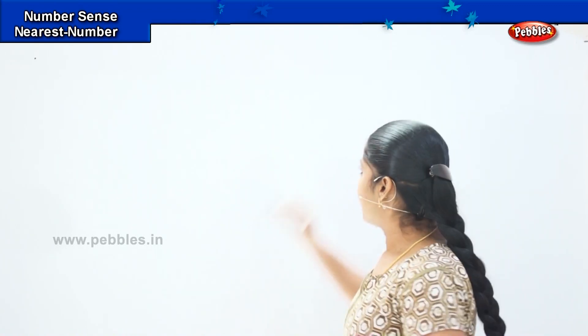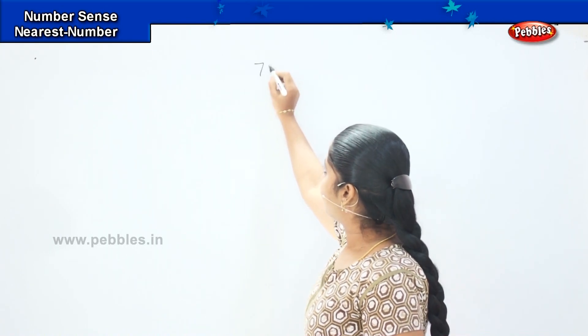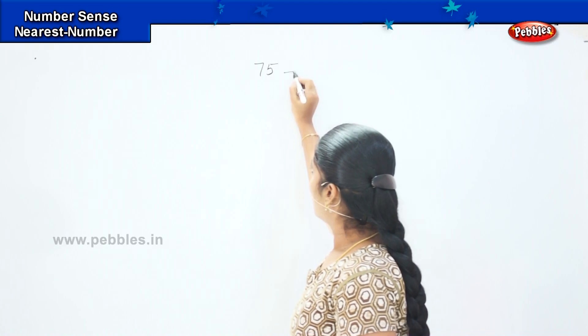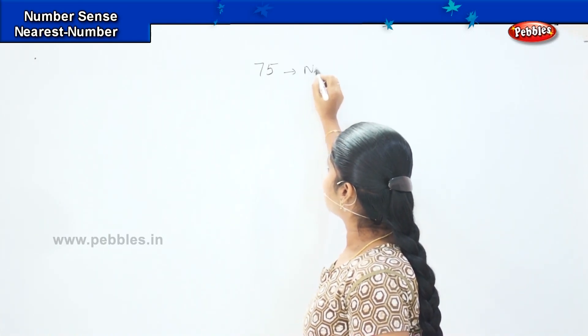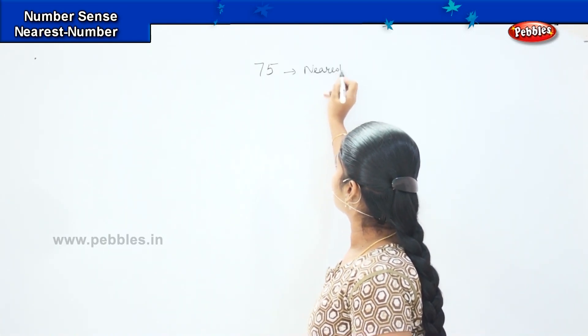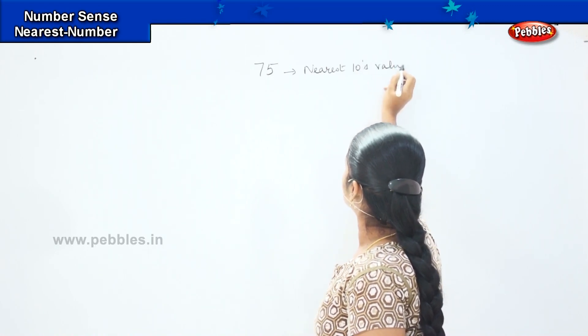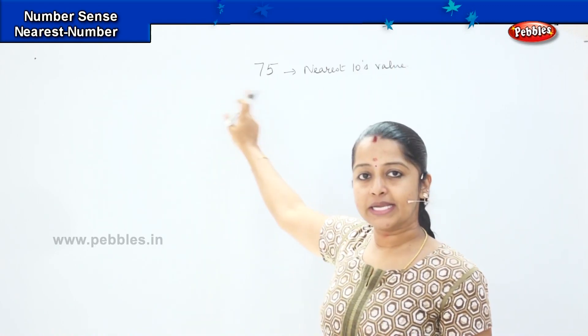The next topic we are going to learn is nearest number. What do you mean by the word nearest? Nearest means something which is very close by, which is very nearby. For example, if I write a number 75, and I want to know which is the nearest tens value — what is nearby 75?